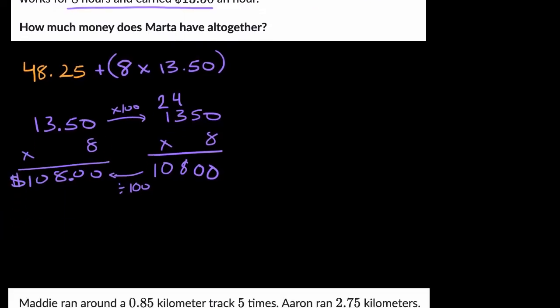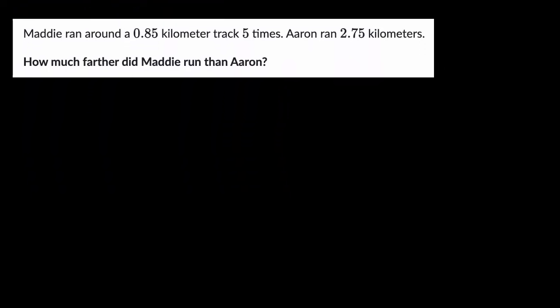Let's do another example. We are told Maddie ran around a 0.85 kilometer track five times. Aaron ran 2.75 kilometers. How much farther did Maddie run than Aaron? Again, pause the video. Try to work through this.